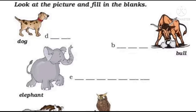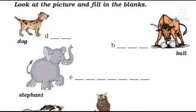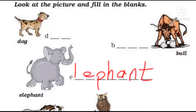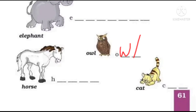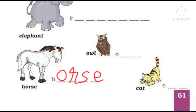Now look at the picture and fill in the blanks. Ab yahaan pe kuch pictures aapko diye gaye hain, toh aapko isko dekhna hai aur fill karna hai. The names are already given. First one is D, O, G - Dog. Next is B, U, double L - Bull. Third one is E, L, E, P, H, A, N, T - Elephant. Elephant yani haathi. Next is O, W, L - Owl. Owl means ullu. Next is H, O, R, S, E - Horse. Horse means ghoda. And last one is C, A, T - Cat. Cat matlab billi.